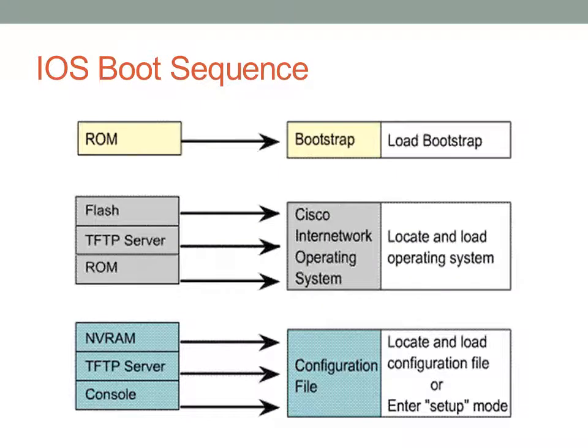I want to talk about how routers typically boot. Normally, routers start with a bootloader called ROM MON, which is loaded directly from ROM into memory when the device boots. It provides an entry point and loads the bootstrap, from which point it starts to load the Cisco IOS image. Typically this is an image from Flash, but you can also load it from a TFTP server or directly from ROM, which is known as firmware.